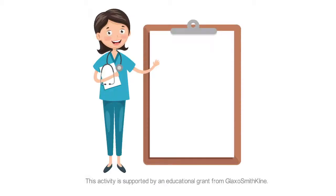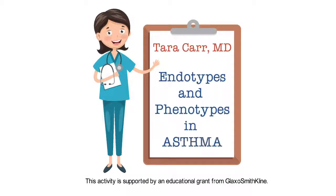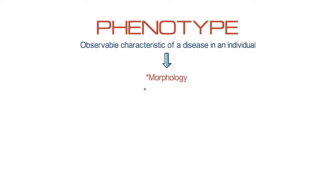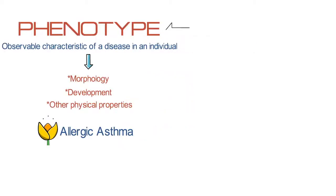This is Tara Carr from the University of Arizona presenting endotypes and phenotypes in asthma. The term phenotype is defined as an observable characteristic of a disease in an individual. This can include morphology, development, or other physical properties. For example, allergic asthma is one type of asthma phenotype.